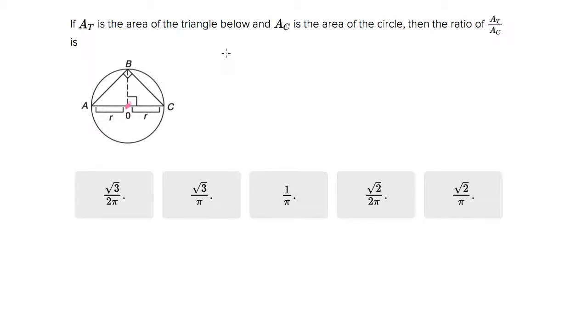Well, area of a triangle is one-half base times height. Area of the circle is πr². Right? So all we have to do is put those into a fraction and then plug in.